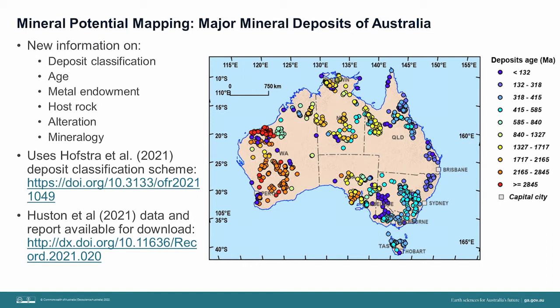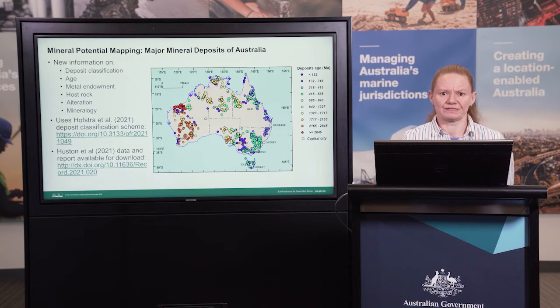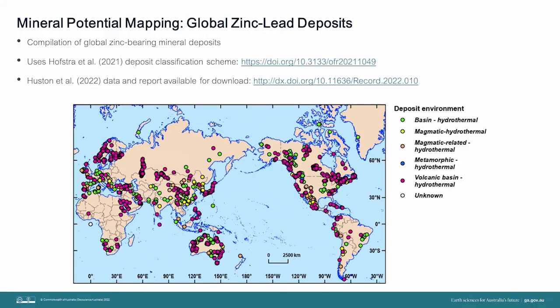This new compilation of major Australian mineral deposits provides new insights into spatial and temporal relationships that can help guide our understanding of mineral systems, and can also be used in conjunction with the mineral occurrences to validate our mineral potential mapping outputs. Preference is to use deposits rather than occurrences because we're trying to target the more economic mineral systems. Another mineral deposit compilation has been undertaken for global zinc-lead deposits, providing information on their name and location, deposit type or mineral system, assigned using the Hofstra et al. deposit classification scheme.